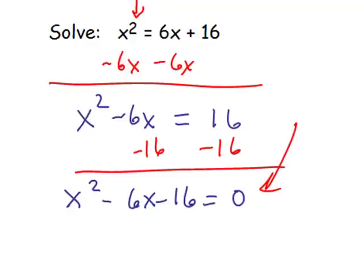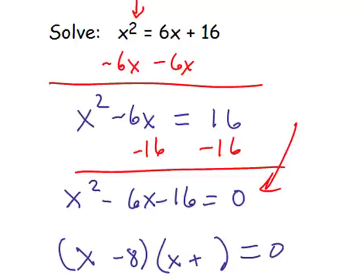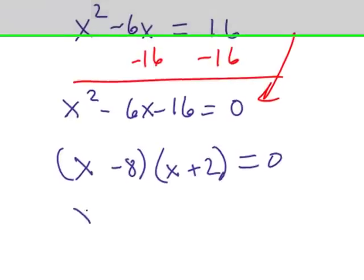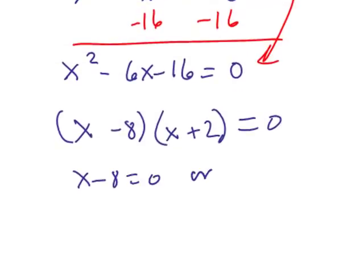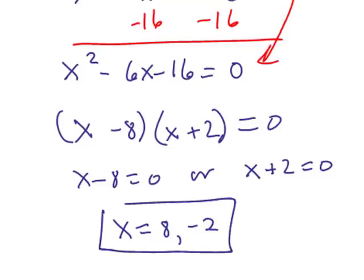Now we must factor. Go ahead and double check the factoring. We end up with x minus 8 equals 0 or x plus 2 equals 0. That means x equals 8, and the other solution is x equals negative 2.